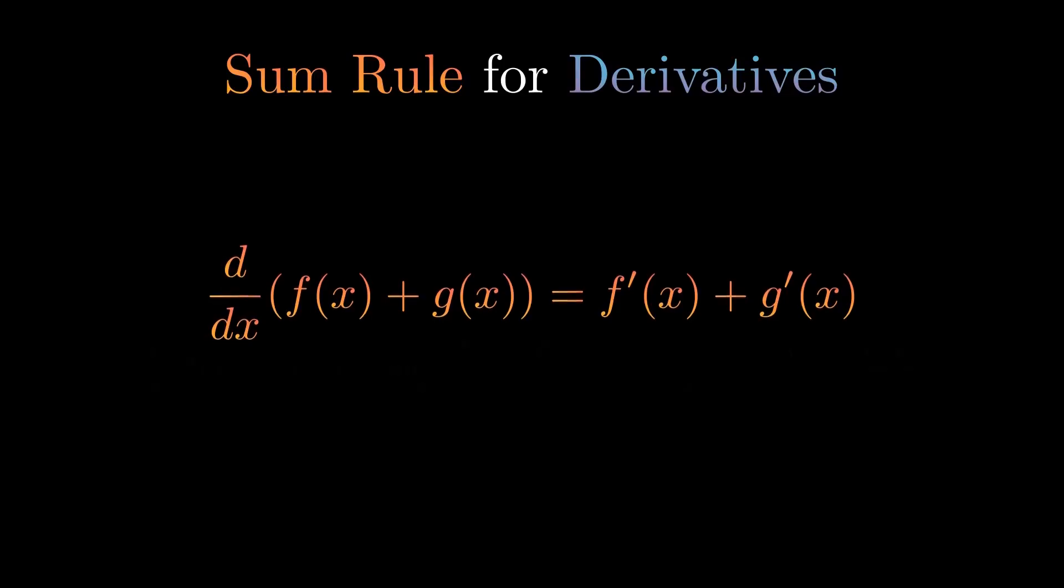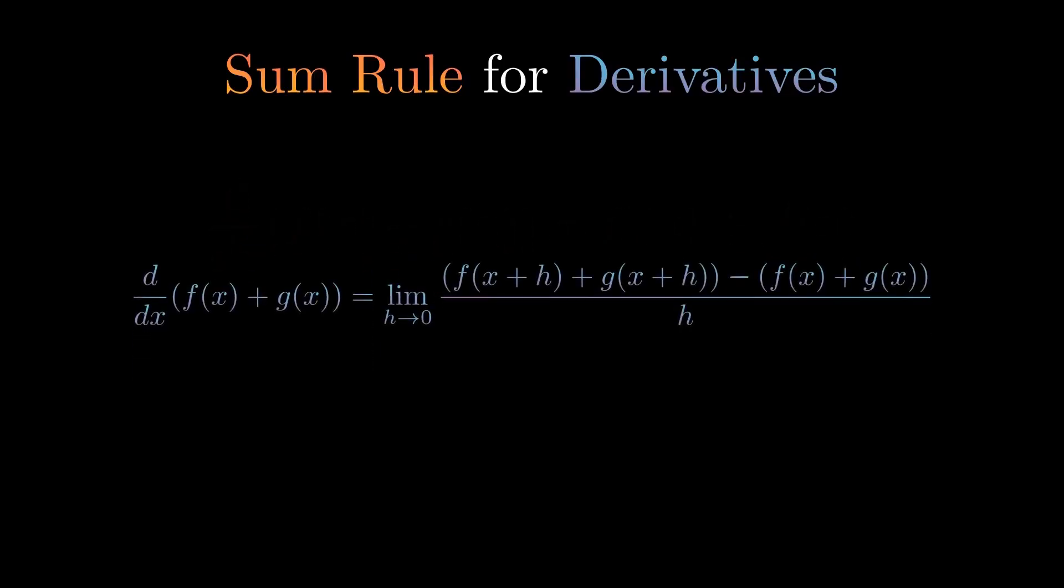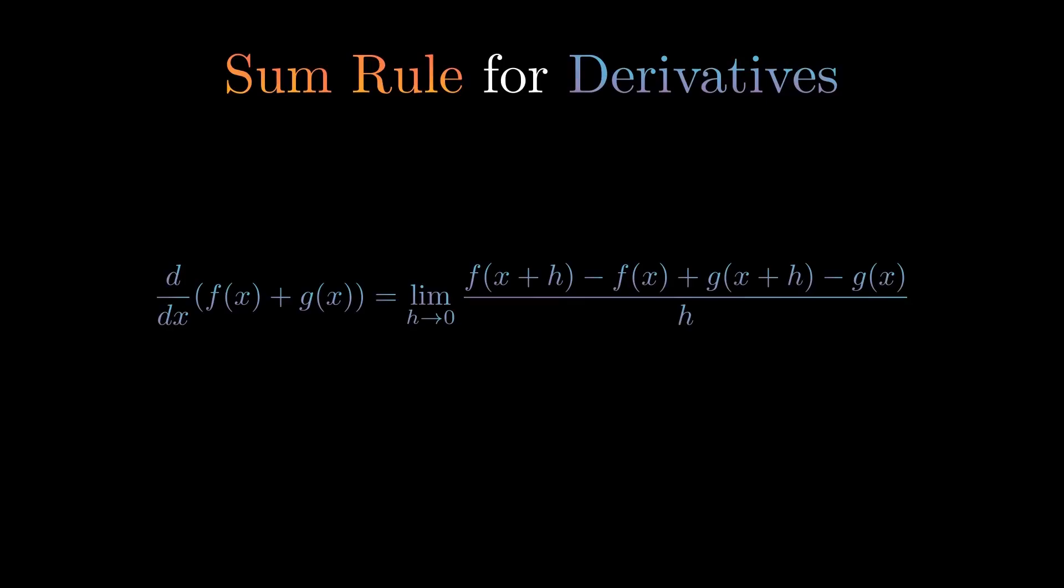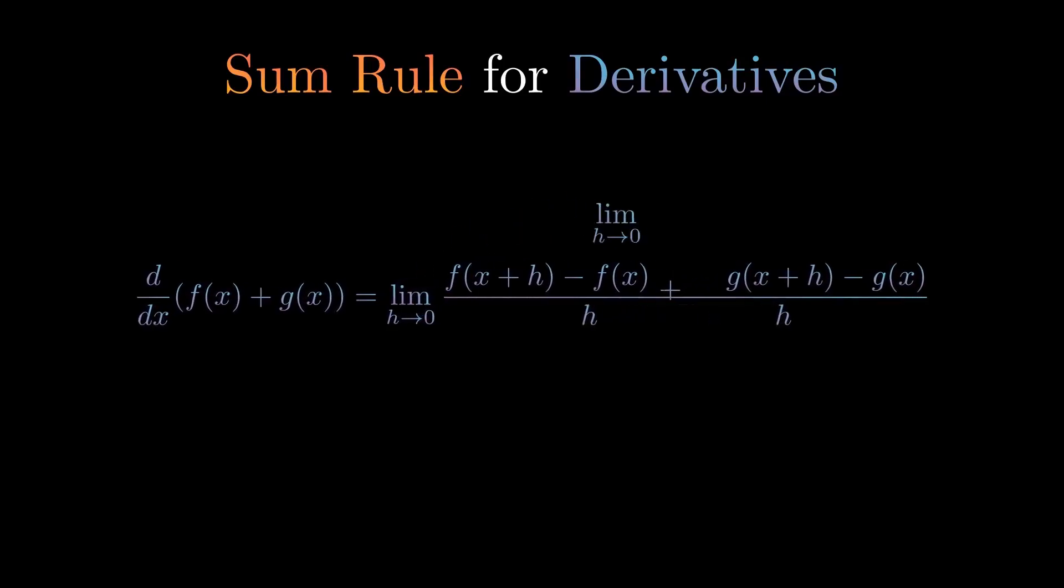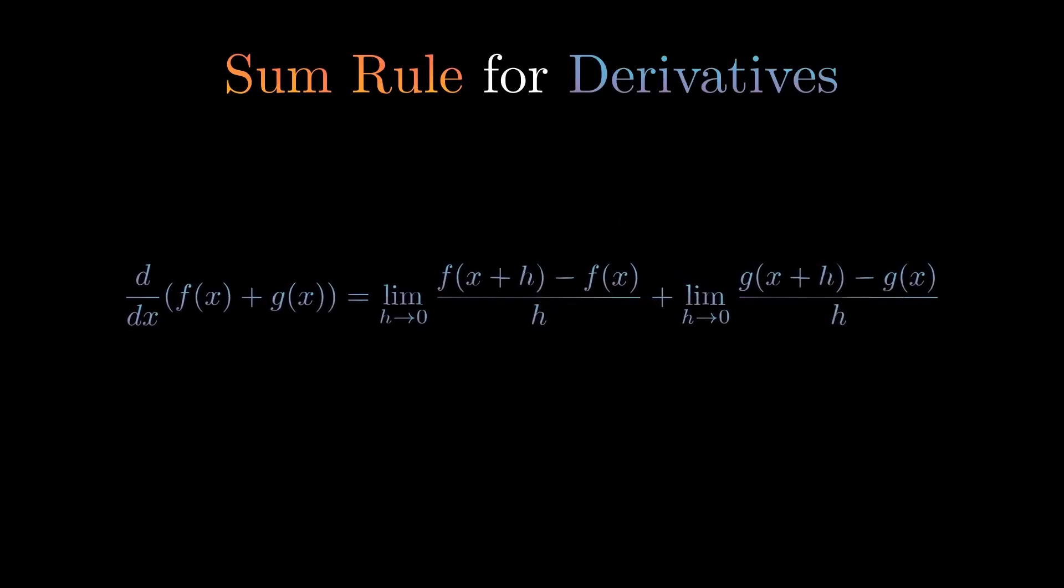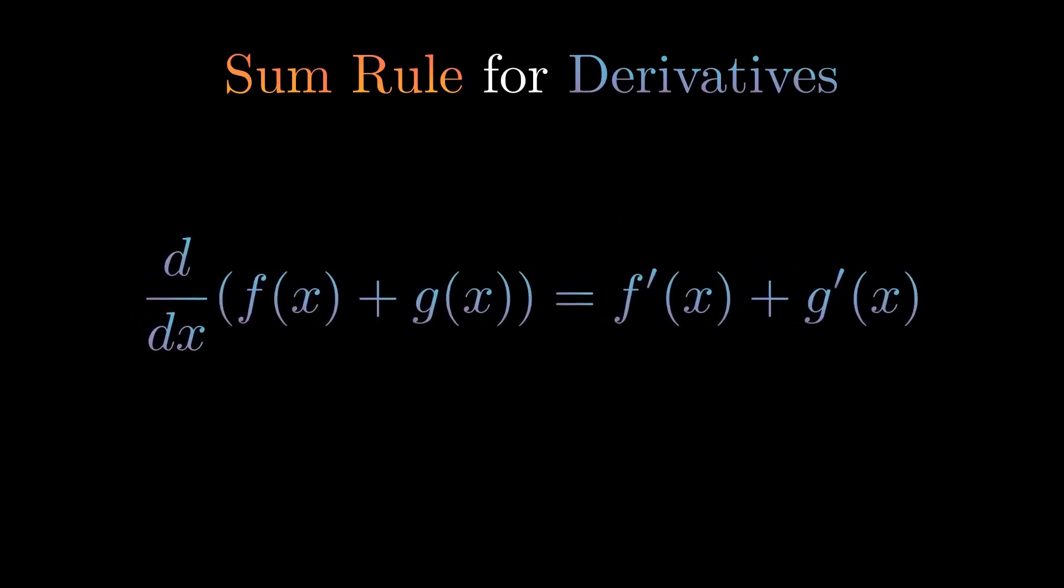We start off with the sum rule. This is quite basic, however we need to practice proving things with the definition of a derivative. We start off by plugging in f(x) plus g(x) into the definition of a derivative. It looks a little long but it's pretty simple. Next we simplify by removing the parentheses. The trick is to rearrange the terms such that the f terms are with the f terms and the g's are with the g. Now you split up the limit. It should be clear here that you can just sub in f'(x) and g'(x). And there you have it, the sum rule for derivatives.